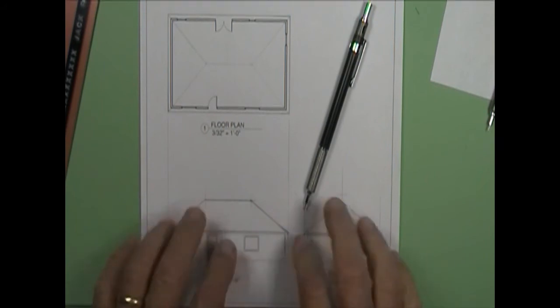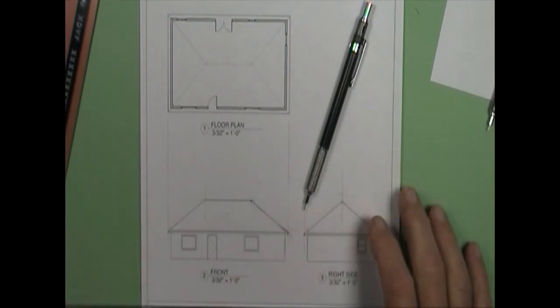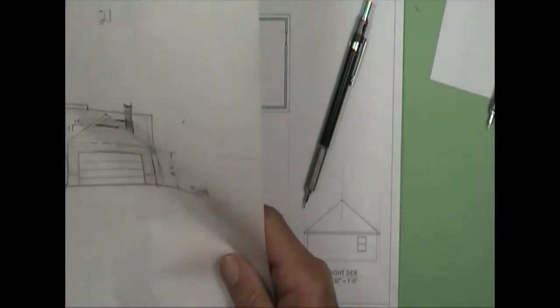And so that's how the roof is going to look. And so now, go ahead and put in some hatching for the roof and siding and the windows there. Kind of make it look pretty like the other ones.